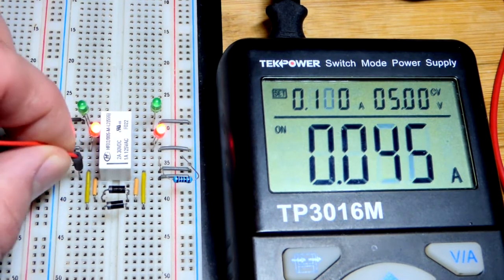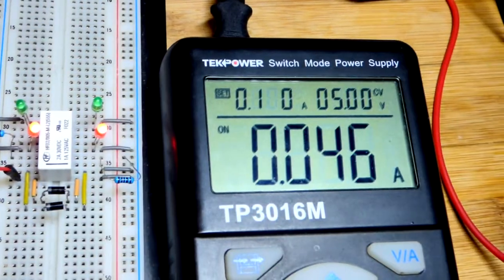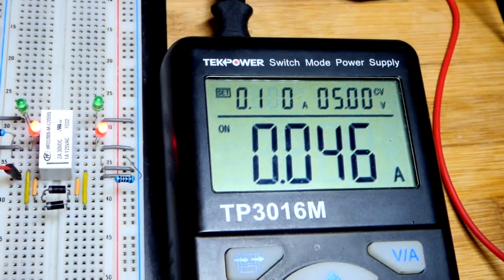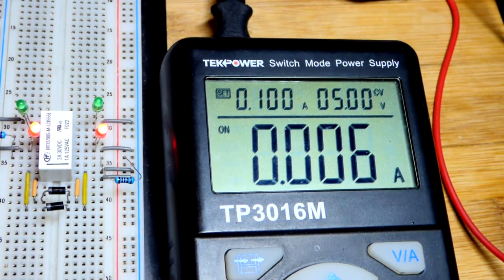Right now I'll energize one of the coils. You can see that current goes way up. We got about 46 milliamps of current approximately, which goes down if I remove that jumper again.